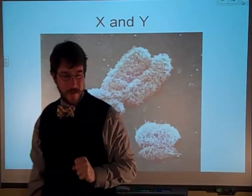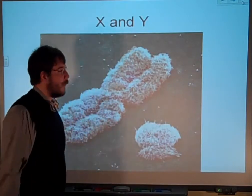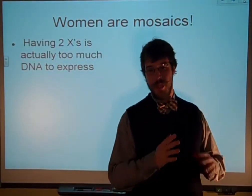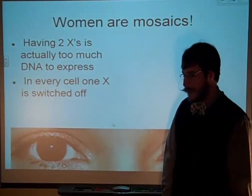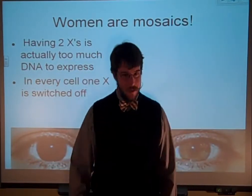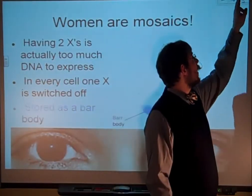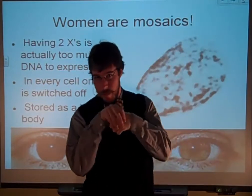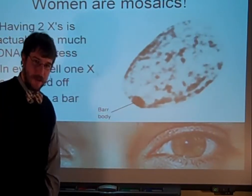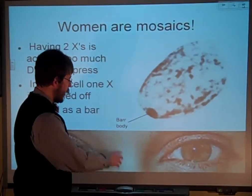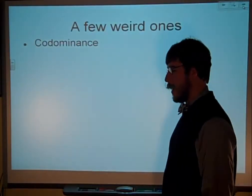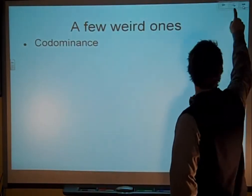You'll notice the X chromosome is this big, massive thing, and then the Y chromosome is just this little itty-bitty one. This is an electron micrograph. Women actually have less genetic material than men — having two X's, those things are so huge, it's actually too much DNA to be expressed. So every X in your cell is switched off randomly. Ladies, you're random mosaics — 50% of your X's get crumpled up into a little ball called a bar body and tossed into the corner of the nucleus.